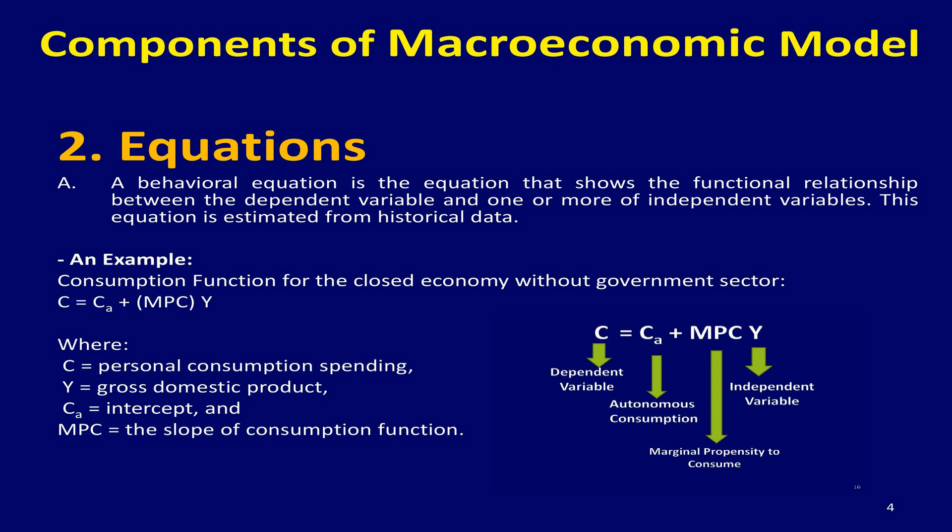The macroeconomic model includes three kinds of equations: a behavioral equation, an identity equation, and the equilibrium condition equation. A behavioral equation is an equation that shows the functional relationship between the dependent variable and one or more independent variables. This equation is estimated from historical data.